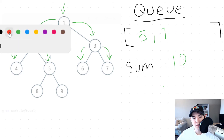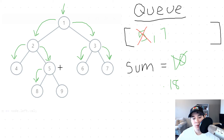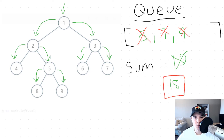We pull node 5 from the queue. Node 8 is a leaf and a left child, so we add it to sum: 10 plus 8 is 18. Node 9 is a right child so we add it to the queue. We pull node 7 — it has no children, so we're done with it. We pull node 9 — it also has no children. We're finished iterating and our sum is 18, just like in the recursive solution.